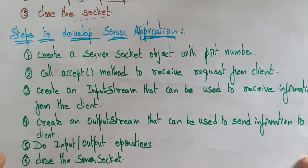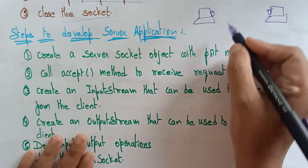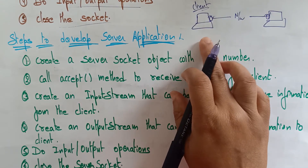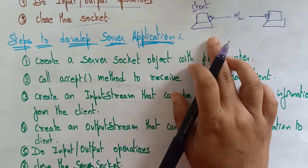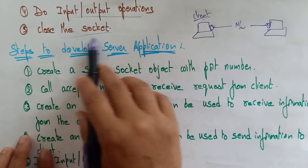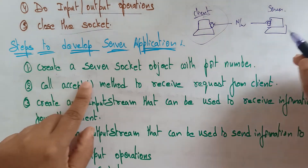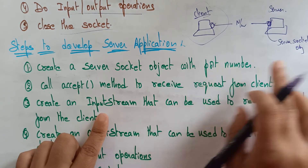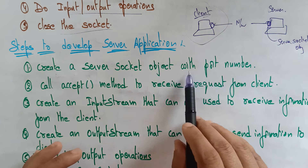Now let's look at the server application. On the server side, the client socket and the server socket are connected over the network. For the server application, the first step is: create a server socket object with only a port number — no address needed, because you are receiving data from the client, so you only require the port number.